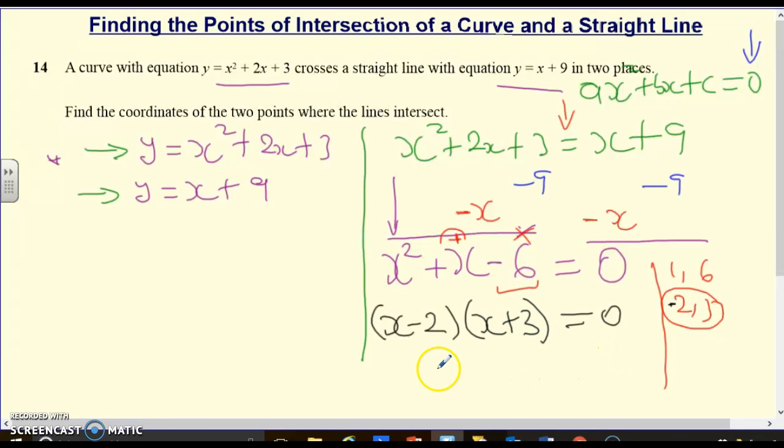At this stage this tells you that you have the product of 2 numbers and they give you 0. This would then mean that either x minus 2 is 0 or